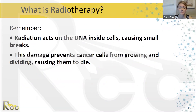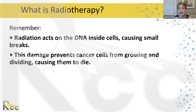Key points to remember: radiation acts primarily on the DNA inside cells, causing breaks that can be lethal to the cell. This damage prevents the cell from growing, dividing, and organizing cellular function, and eventually cells are destroyed through apoptosis, necrosis, or programmed cell death.